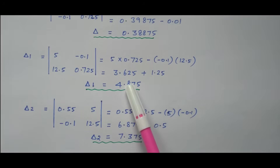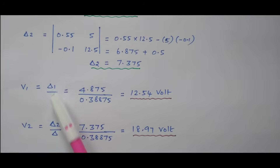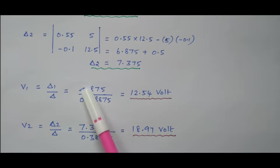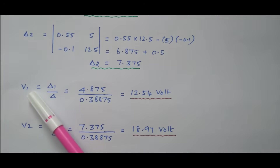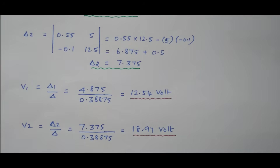Now we have delta, delta 1, and delta 2. Using V1 equals delta 1 divided by delta: 4.875 divided by 0.38875 gives V1 equals 12.54 volts. V2 equals delta 2 divided by delta: 7.375 divided by 0.38875 gives V2 equals 18.97 volts. The same problem solved by the equation method is linked in the description box — we get the same answer.